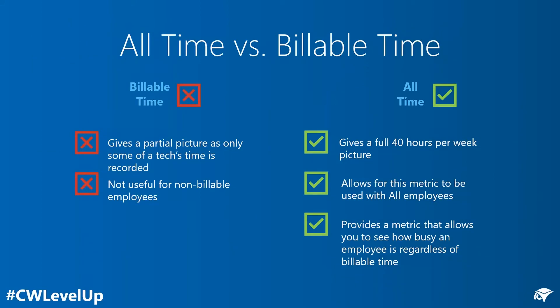Some pros and cons between the two: when you're tracking just billable time, you're only going to get a partial picture of what's going on, because you may see that your resources are 100% billable but they only logged 27 hours instead of a full 40. Additionally, any of your non-billable resources — finance, dispatchers, management — time entry in Manage becomes less useful to them as they're not billable, so oftentimes you don't get much detail from them there.